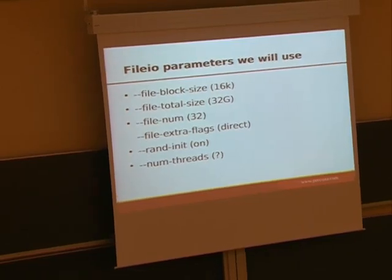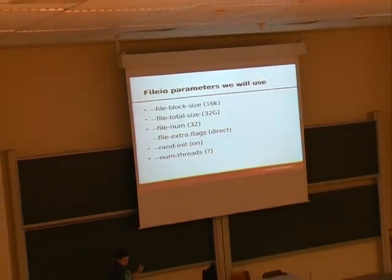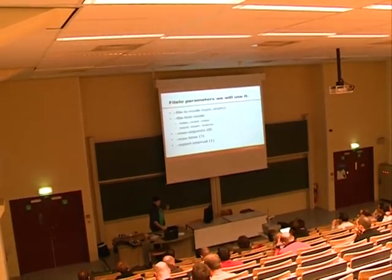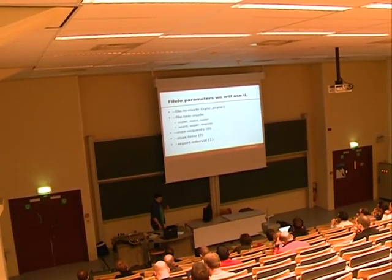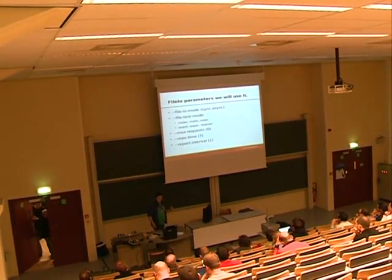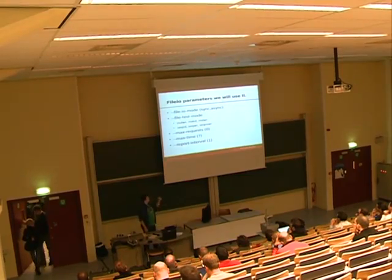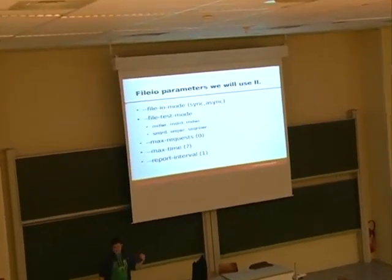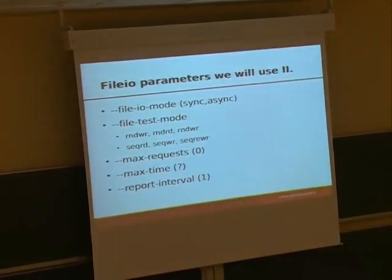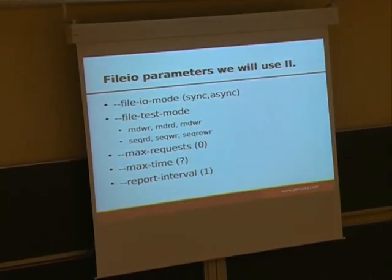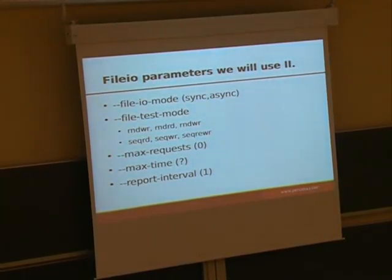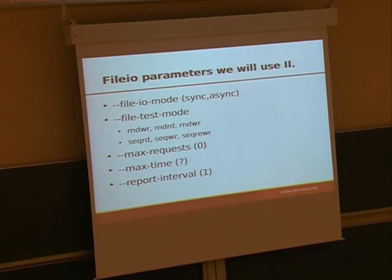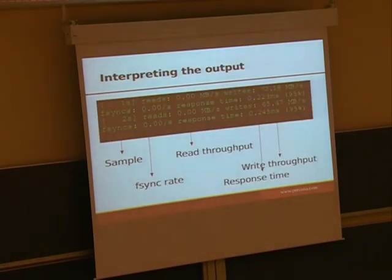So we won't have a bottleneck on random number generation. We will vary the number of threads. We will test synchronous and asynchronous IO, and we will test random reads, writes, and random reads/writes in mix. We will also use the max request parameter so we don't limit the benchmark based on requests, and the max time parameter, and we will capture the metrics every second.